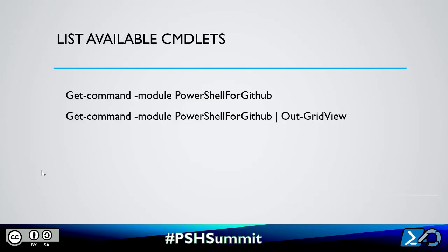A basic way to understand how it works is to list cmdlets available in the PowerShell module using get-command -module PowerShellForGitHub. I always use out-gridview to filter my cmdlets — for instance, to find which cmdlet allows you to manage a repository.